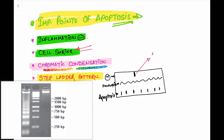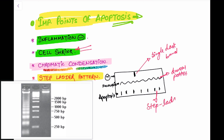To summarize the gel electrophoresis findings: in normal cells there is a single dark band, in necrosis a smear pattern, and in apoptosis a step ladder pattern. This step ladder pattern is a hallmark feature of apoptosis.